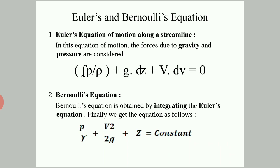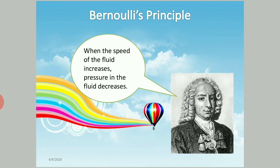From Euler's equation, Bernoulli derived his equation. Bernoulli's equation is obtained by integrating Euler's equation of motion, giving: P/γ + V²/2g + Z = constant. Bernoulli's principle states that when the velocity or speed of a fluid increases, the pressure in the fluid decreases, and vice versa.